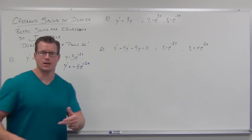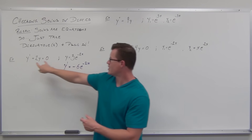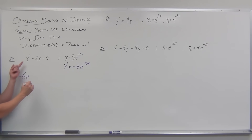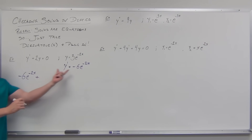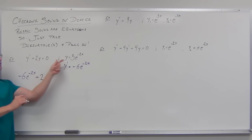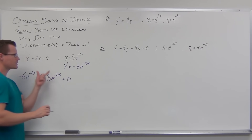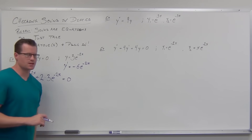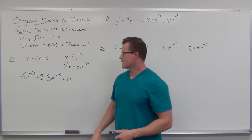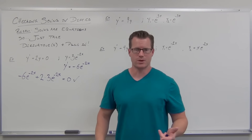Now we just plug these things in. We take the original function and put it in for y, and we take the first derivative and put it in for y prime. Our first derivative is negative 6e to the negative 2x, and then we have 2 times our original function. Putting this all together, it should equal zero. Sure enough: negative 6e to the negative 2x plus 6e to the negative 2x equals zero. This is satisfied — that equation is a solution to that differential equation.